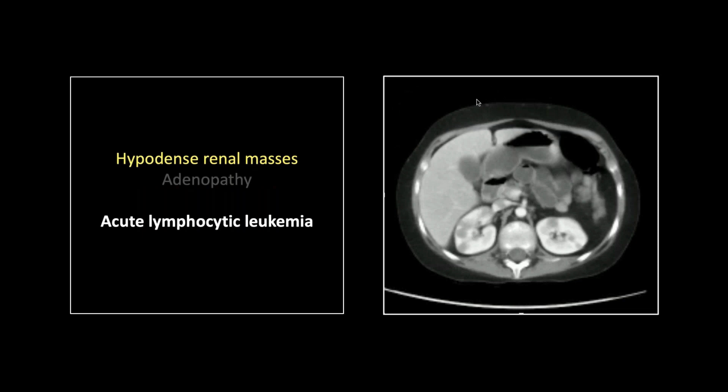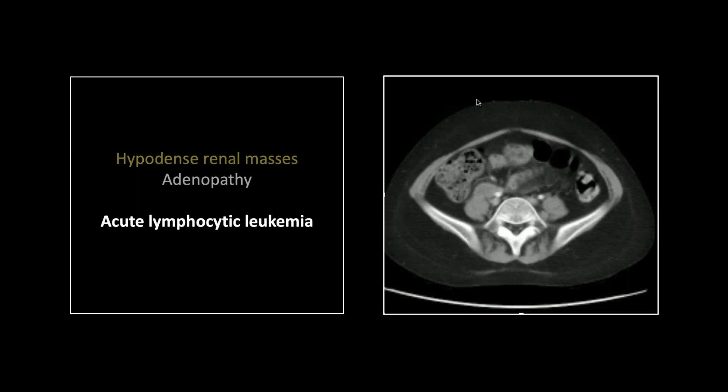Our next one is an ALL — this one in an adult. This really struck me because I always remembered learning this when studying for boards: these are hypodense renal masses. Whenever I picture lymphoma involving an organ I think of it as infiltrative, but it doesn't have to be. In fact, the most common manifestation of lymphoma involvement of the kidneys is hypodense rounded masses. This is lymphoma involving the kidneys — pretty typical.